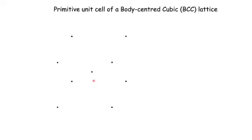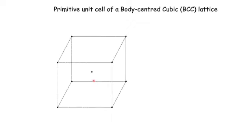For a given lattice there are infinitely many unit cells. The conventional unit cell is only one of them. In the case of BCC, this conventional unit cell is a non-primitive one because it has an additional lattice point in the center apart from those at the corners.